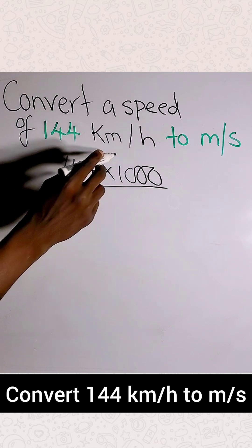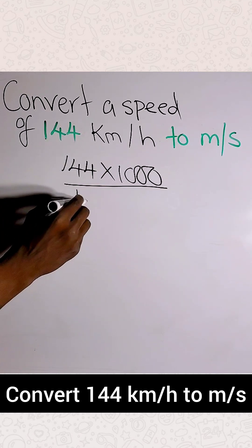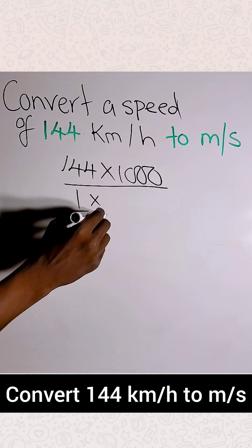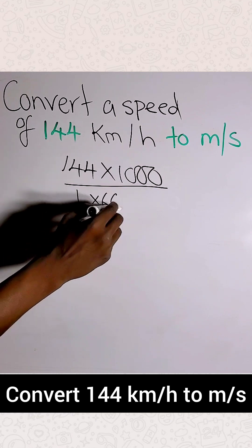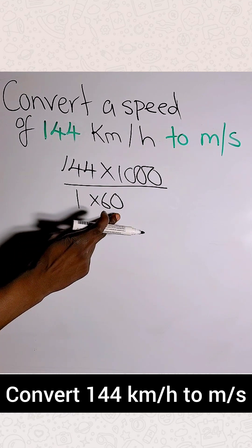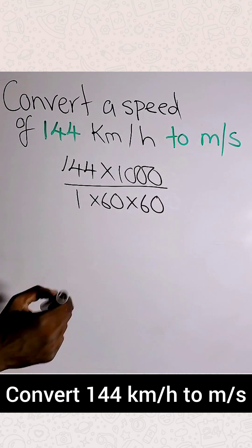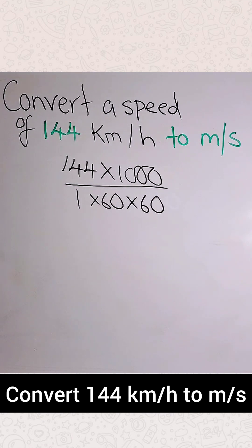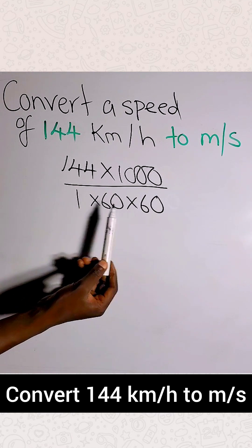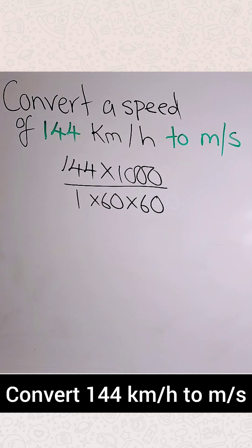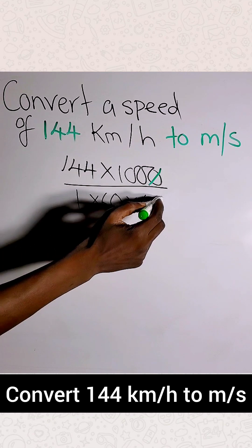Then for the time unit: one hour, you multiply by 60 to convert to minutes, then multiply by another 60 to convert to seconds. So in other words, you're multiplying by 3600 seconds.